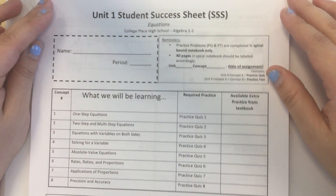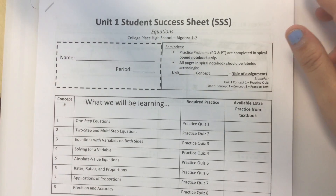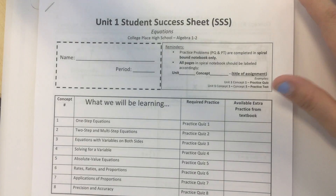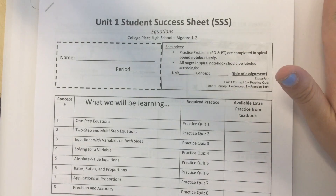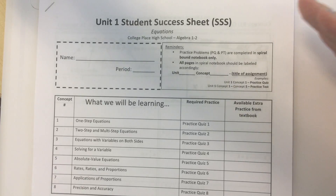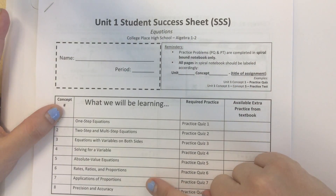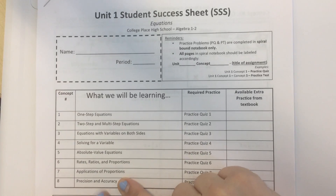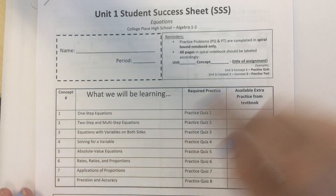All right, welcome to Unit 1. We're going to start this year by talking about equations. Basically, we're going to go through basic types of equations, then work our way to more complicated equations, and then getting more into proportions, and then talking about some abstract concepts about precision and accuracy.